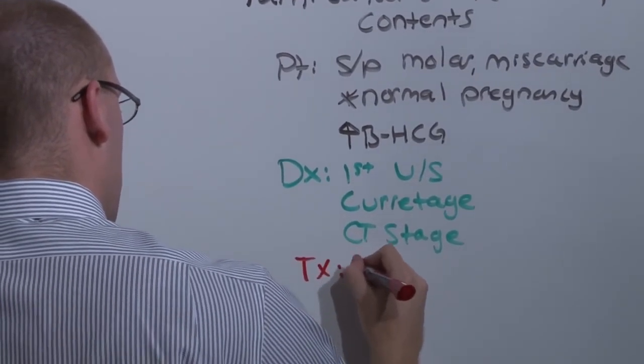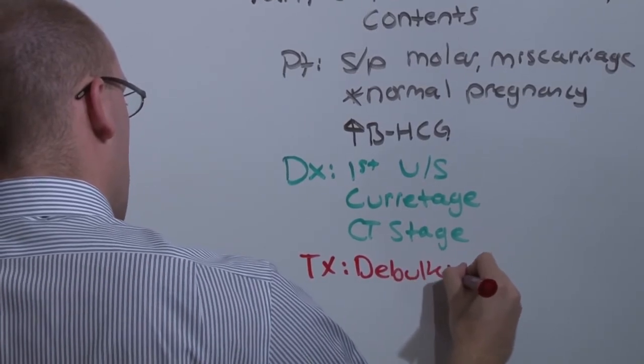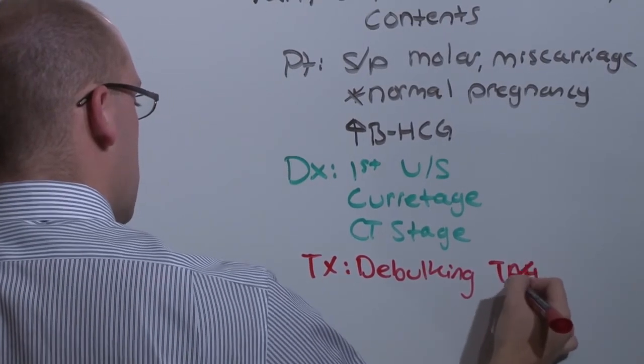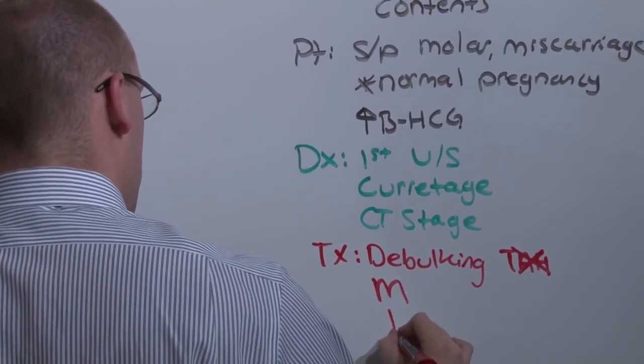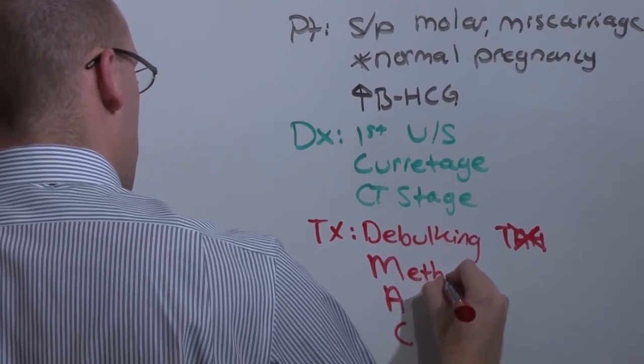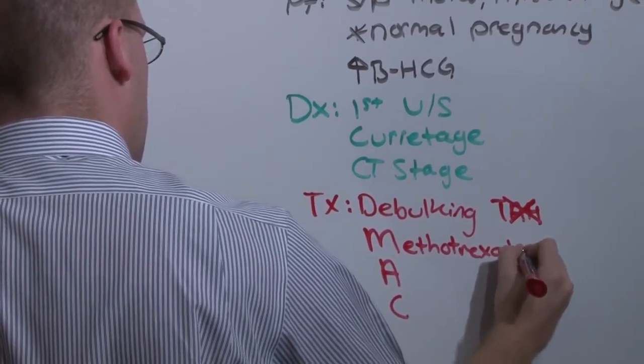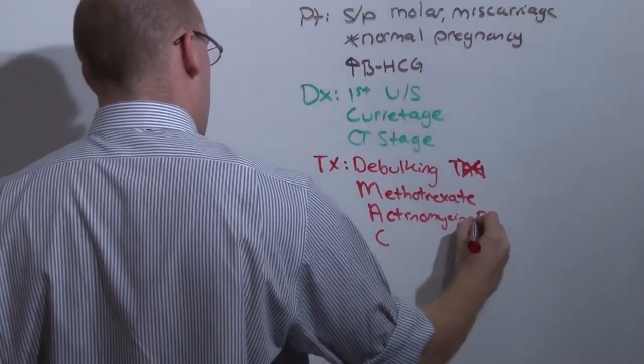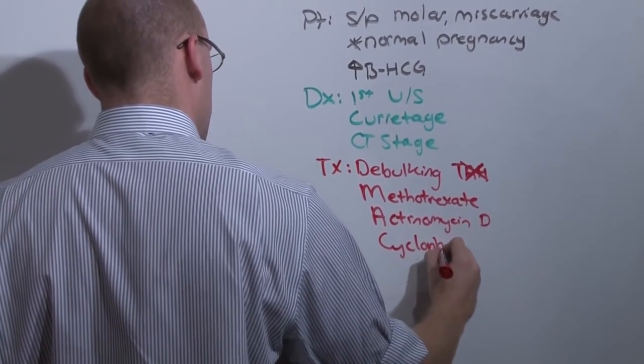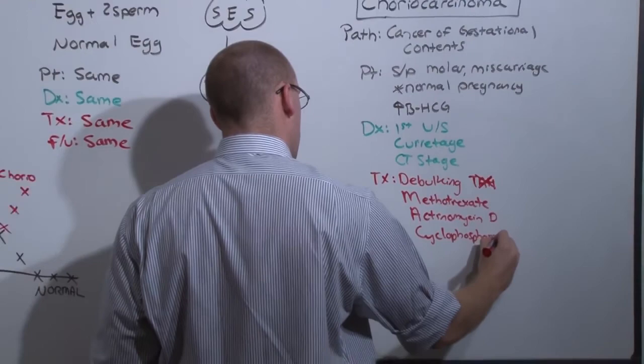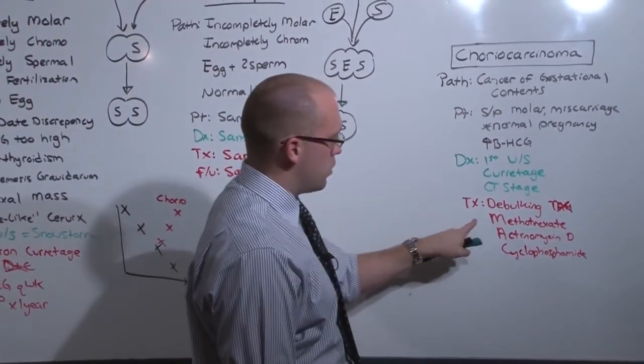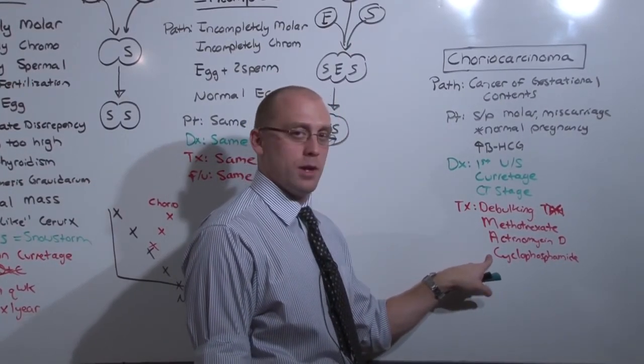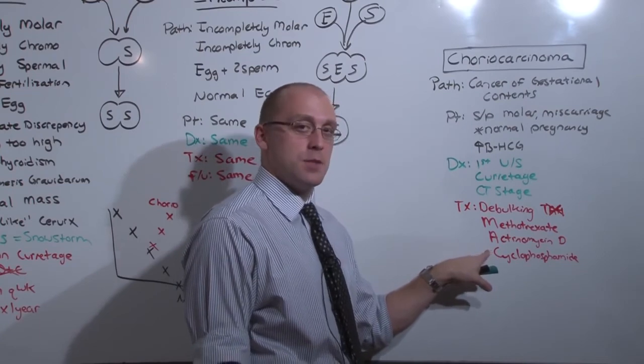Treatment is going to be done by first debulking. And that can be done with the curettage, but often OBs will recommend a total abdominal hysterectomy. This is not necessary. And you are going to treat with some component of MAC: methotrexate, actinomycin, and cyclophosphamide. Everybody gets methotrexate and actinomycin D. Certain people get cyclophosphamide, and that is when the disease is metastatic and has a poor prognosis.